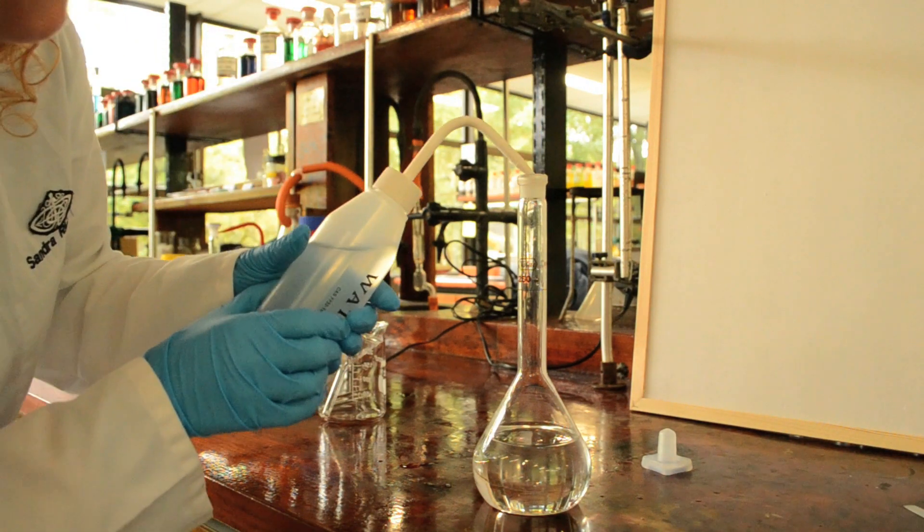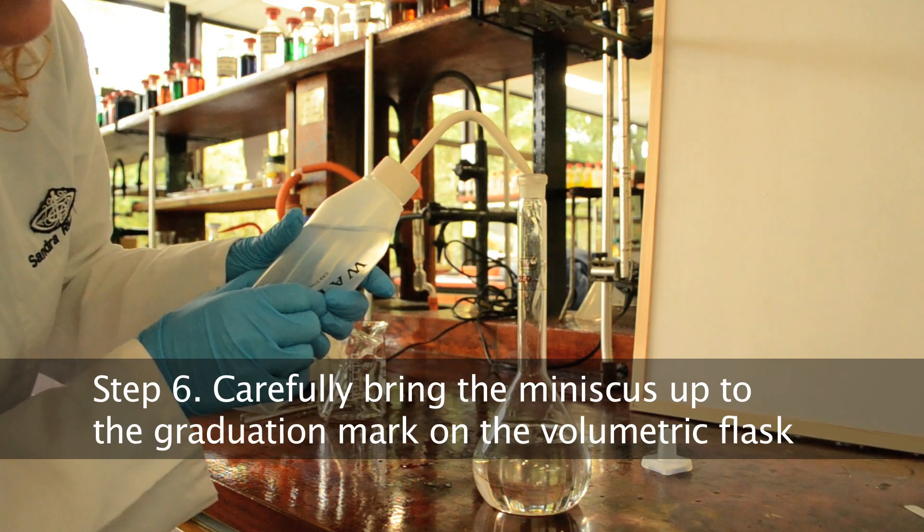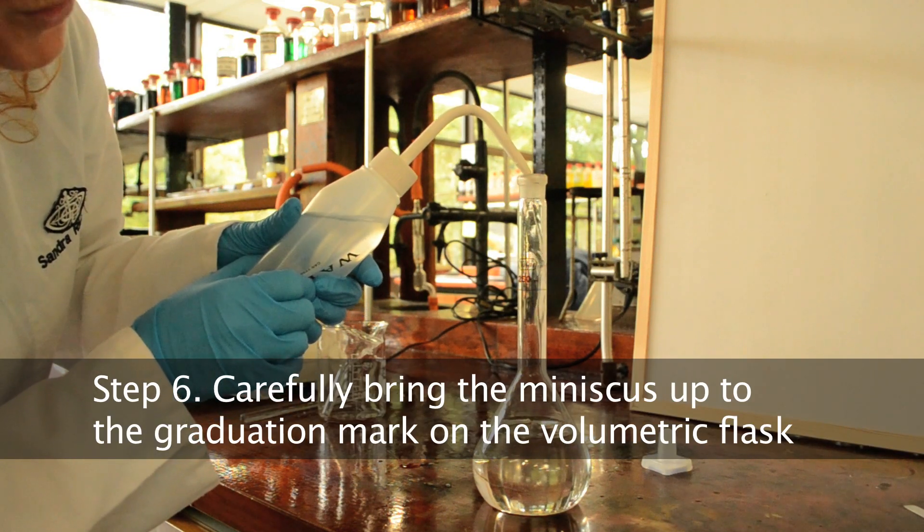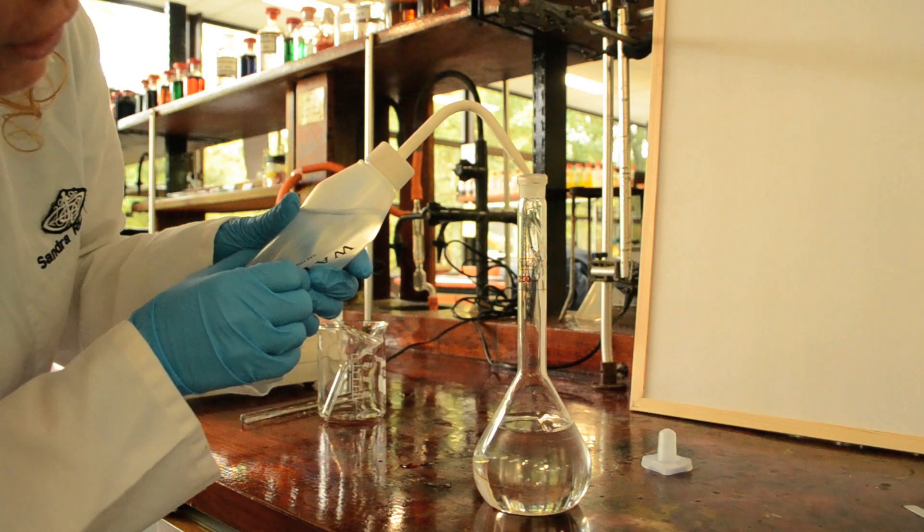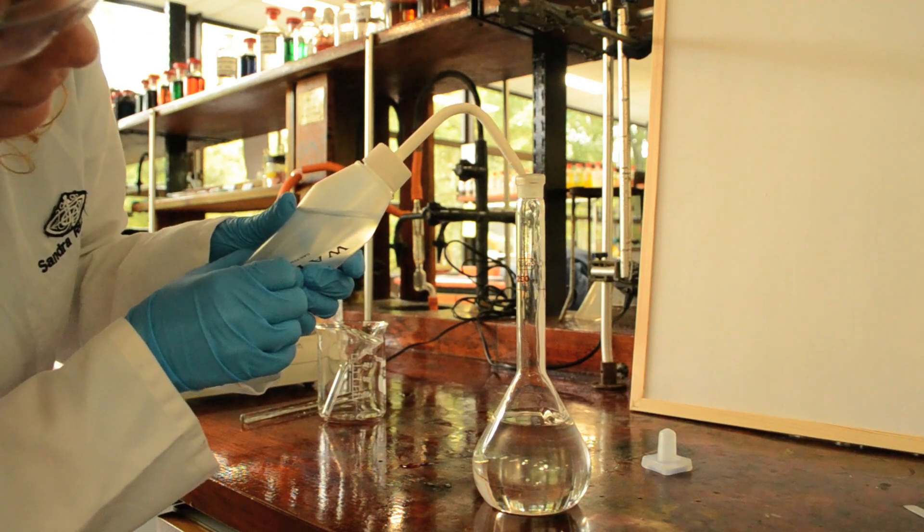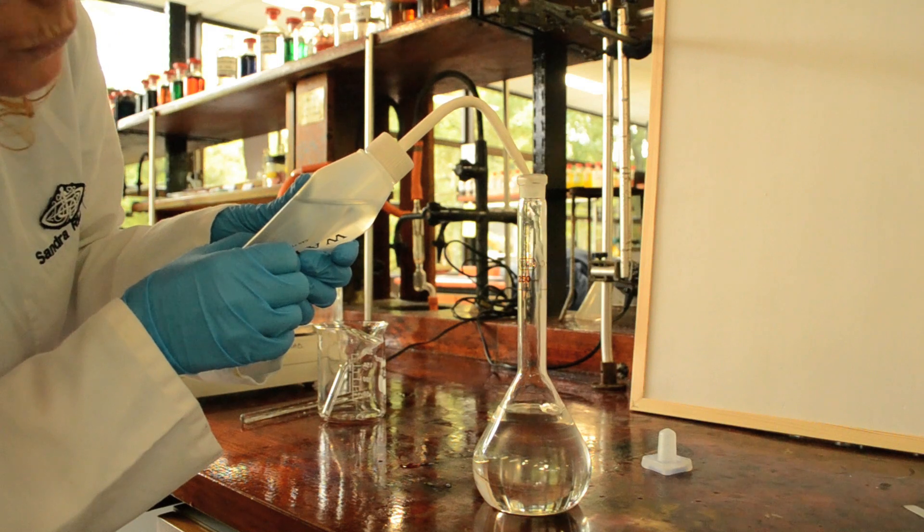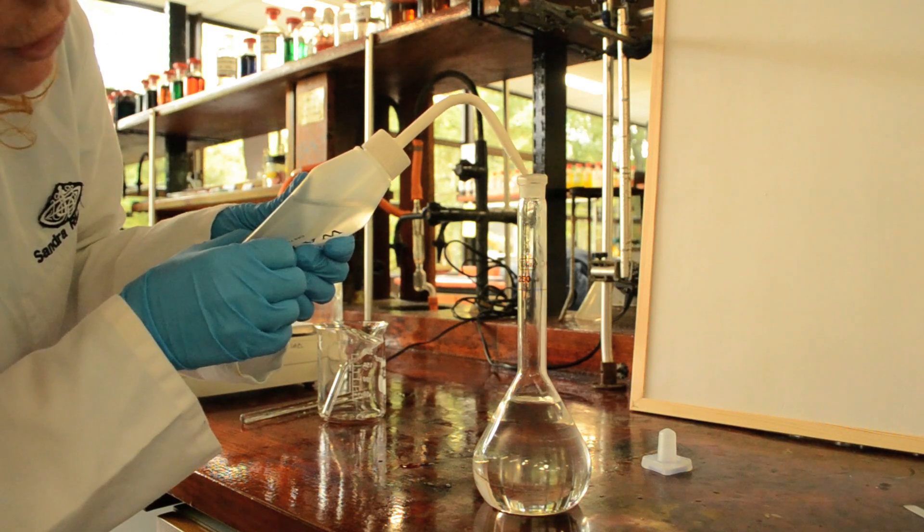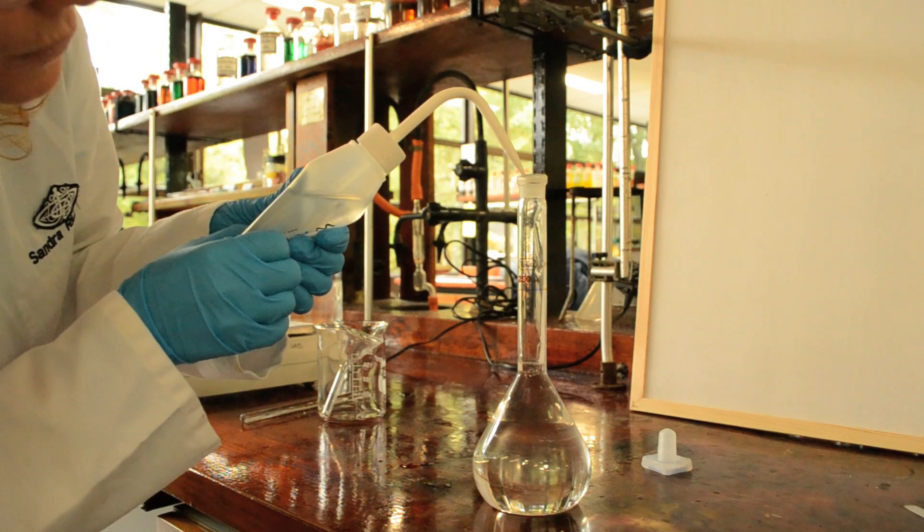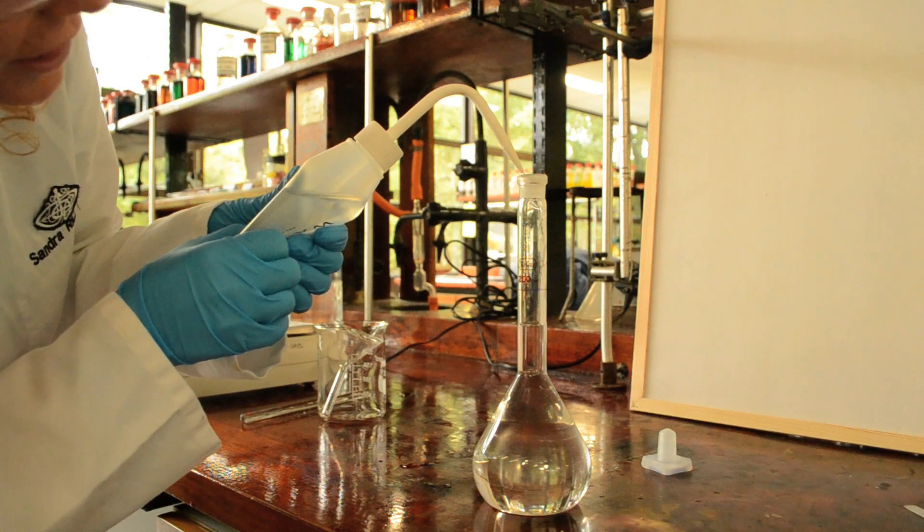Now I will top up the volumetric flask with deionized water, up to within about 1 cm of the graduation mark. The reason I'm using deionized water is because tap water can contain some contaminants which may interfere with our titration later.